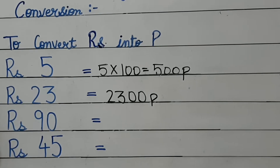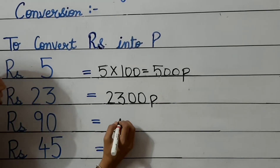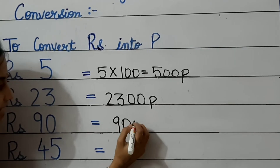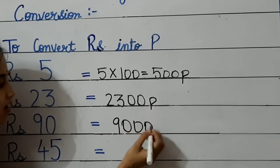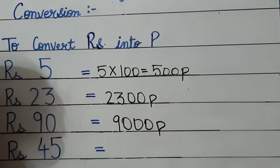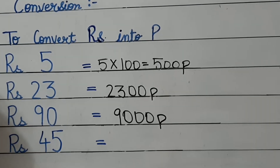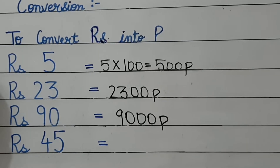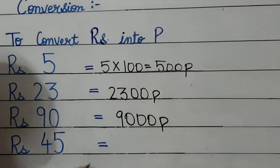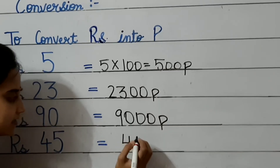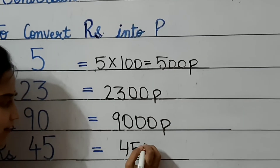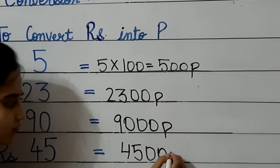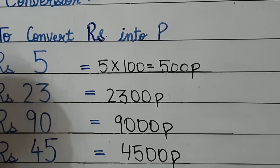Next, rupees 90. Here also you just have to write 90 and add 2 zeros to it, making it 9000 paise. Next, rupees 45. Here also you write 45 and add 2 zeros to make it 4500 paise.